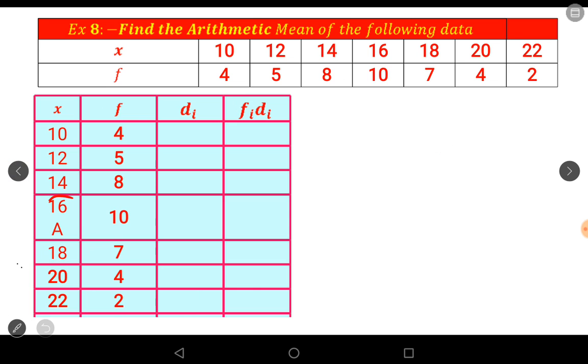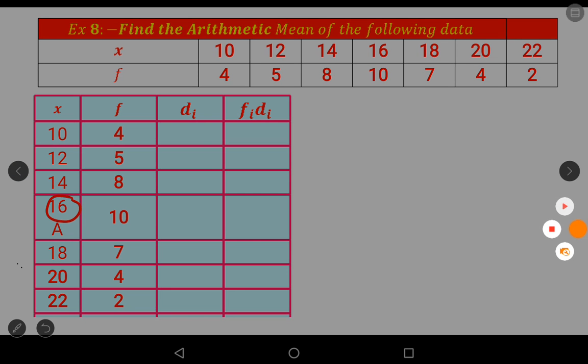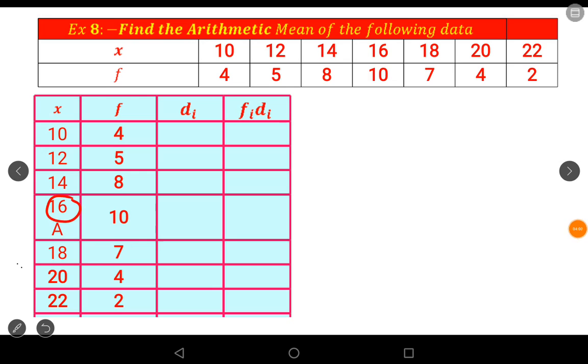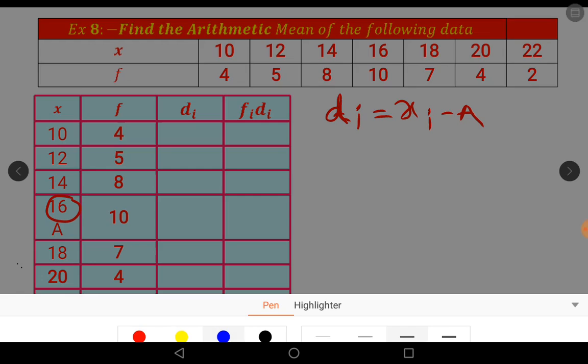Here we assume A is equal to 16, the assumed mean is equal to 16. The deviation d_i formula is d_i equals x_i minus capital A. Deviation d_i equals x_i minus A, where x_i means first class observation. Here observe the table.